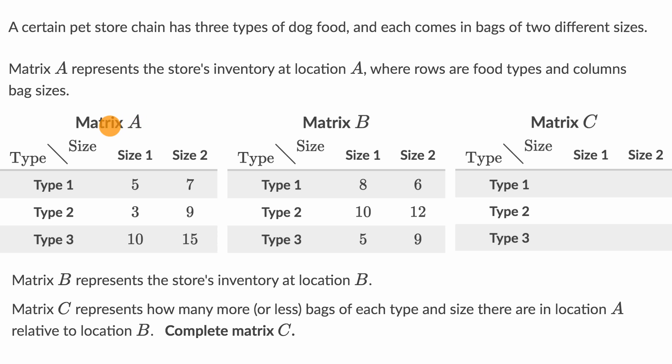So let's see, it's store A, that's what matrix A is telling us. They're telling us we have three different types of food, three different types of dog food, and then they each come in two different sizes.